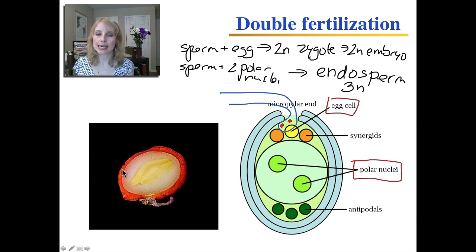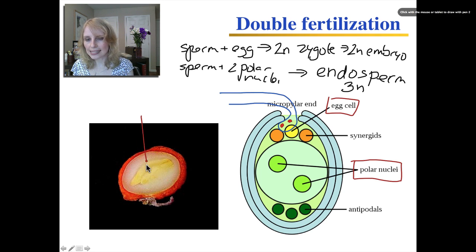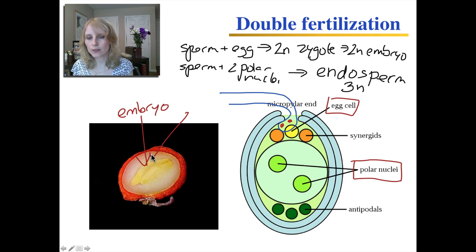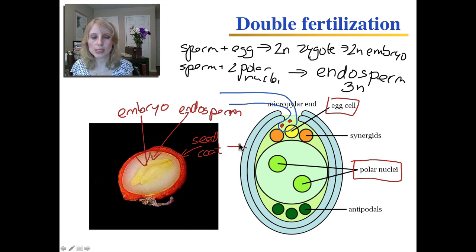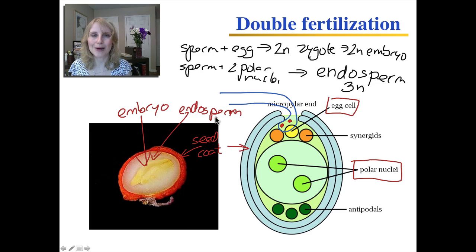Here you can see a seed where all of these parts are visible. Inside is the embryo. This white stuff is the endosperm. And the outside of the seed — the seed coat — is what actually used to be the outside of the ovule. So the outside of the ovule becomes the seed coat, the fertilized egg becomes the embryo, and the fertilized polar nuclei become the endosperm.